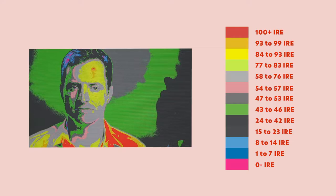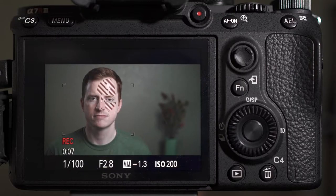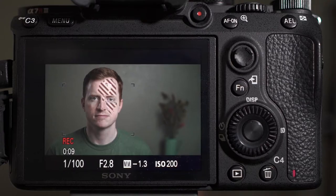Exposure tool number three is zebras. Zebras are black and white stripes that show up on your image to let you know which areas have pixels at a certain brightness level. It's kind of like if you took one color from your false color map and put stripes on it — then you'd have zebras.